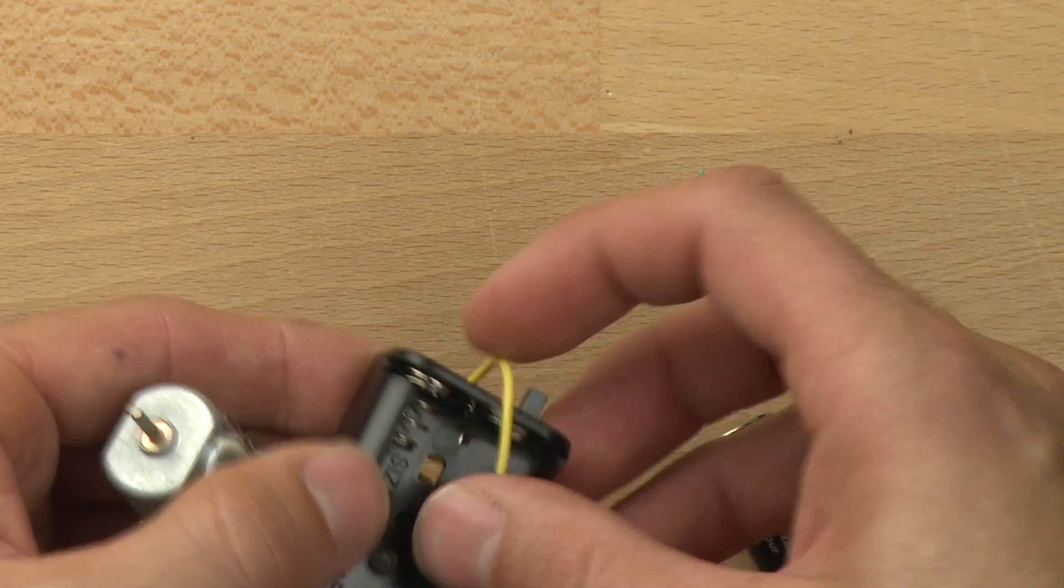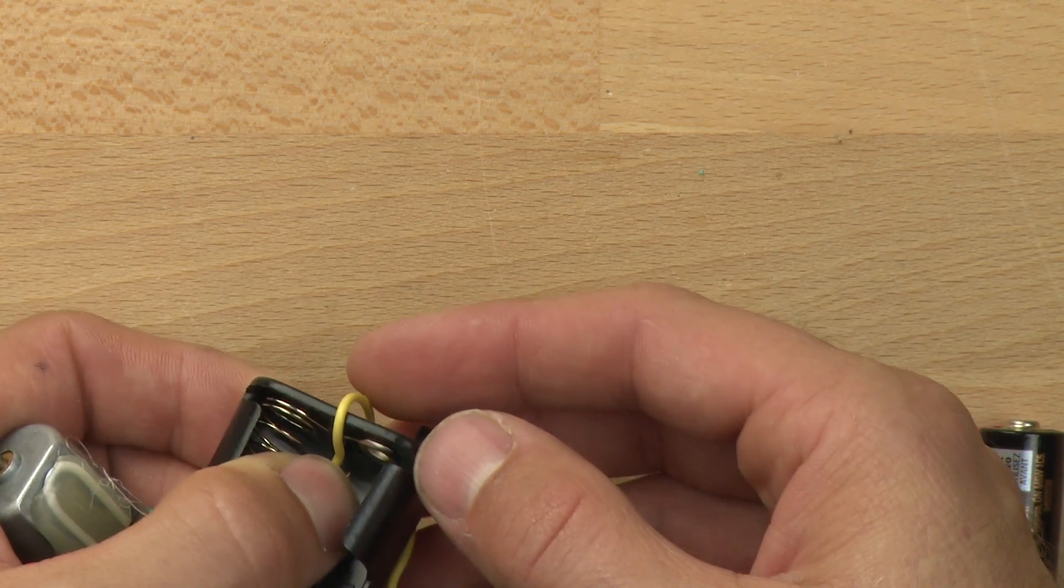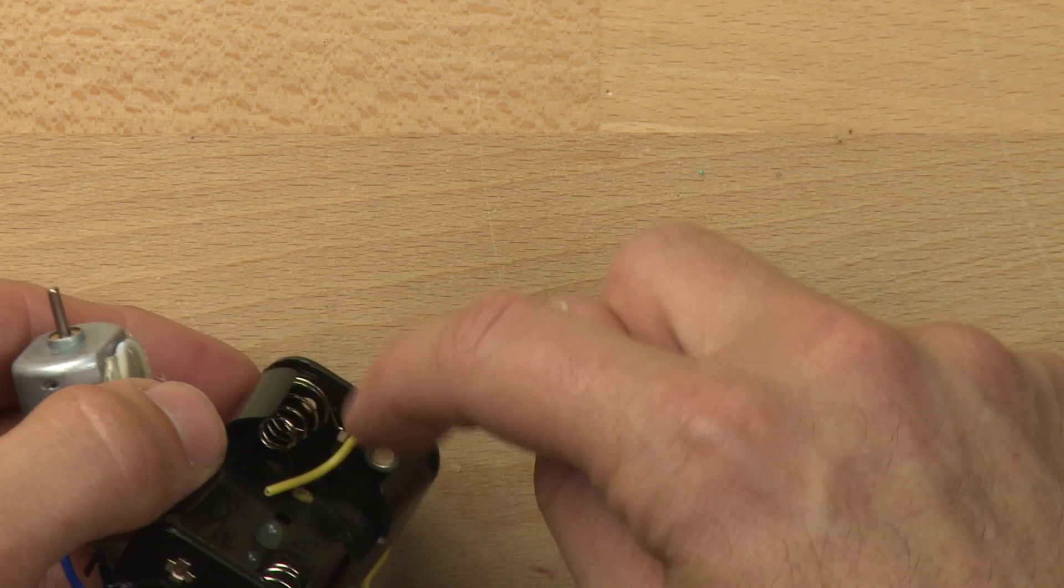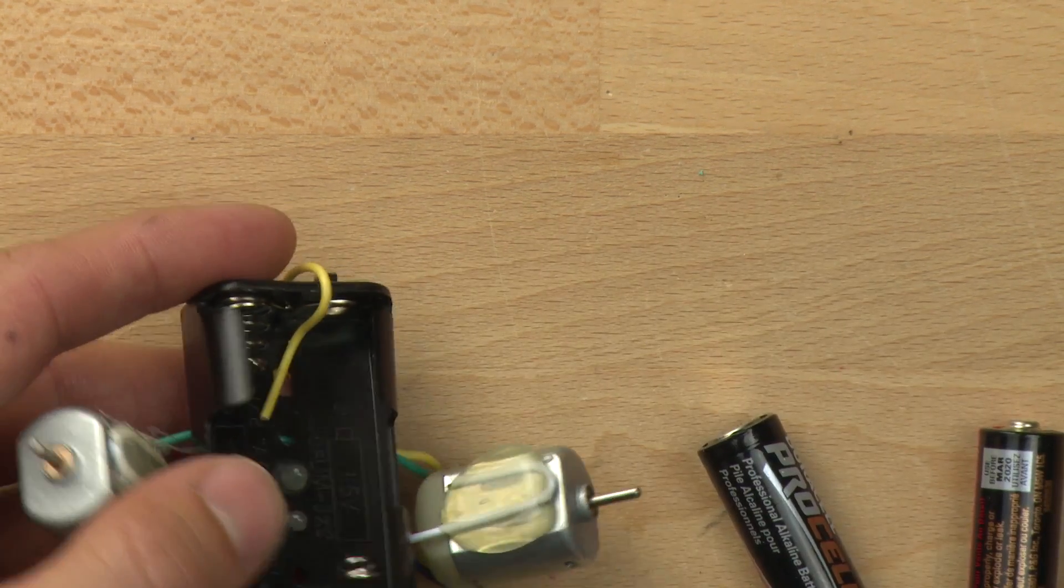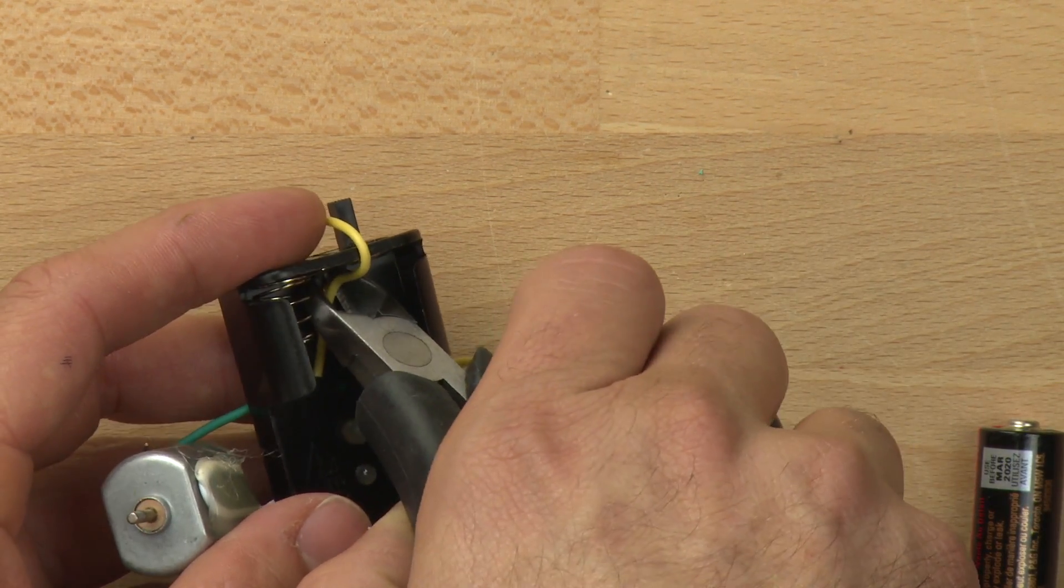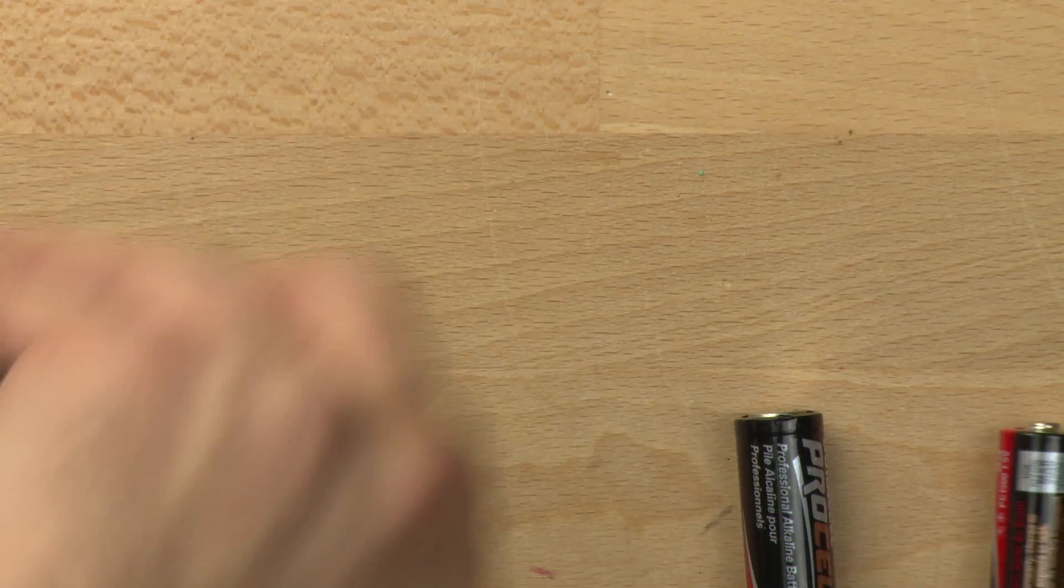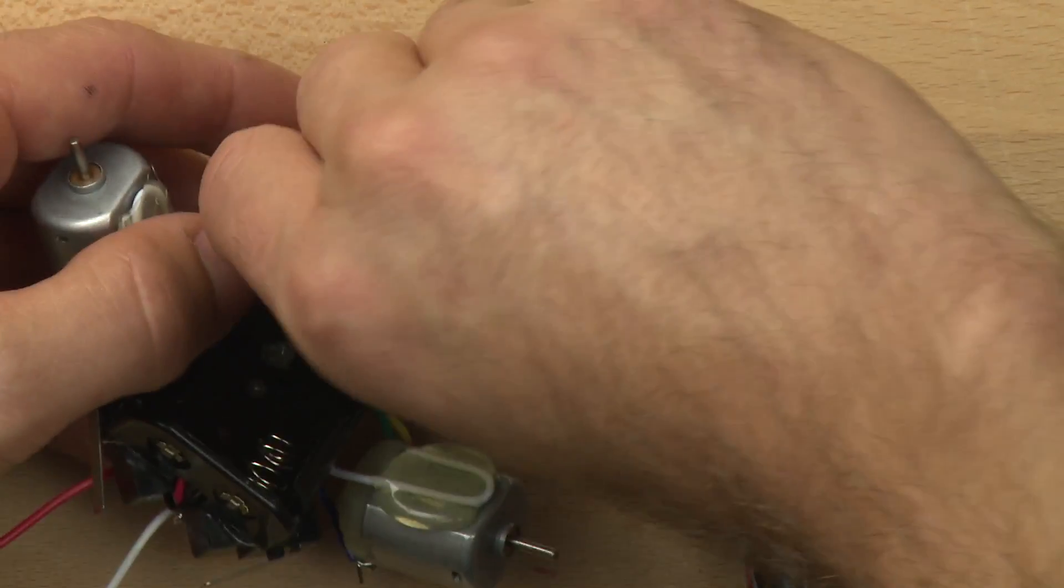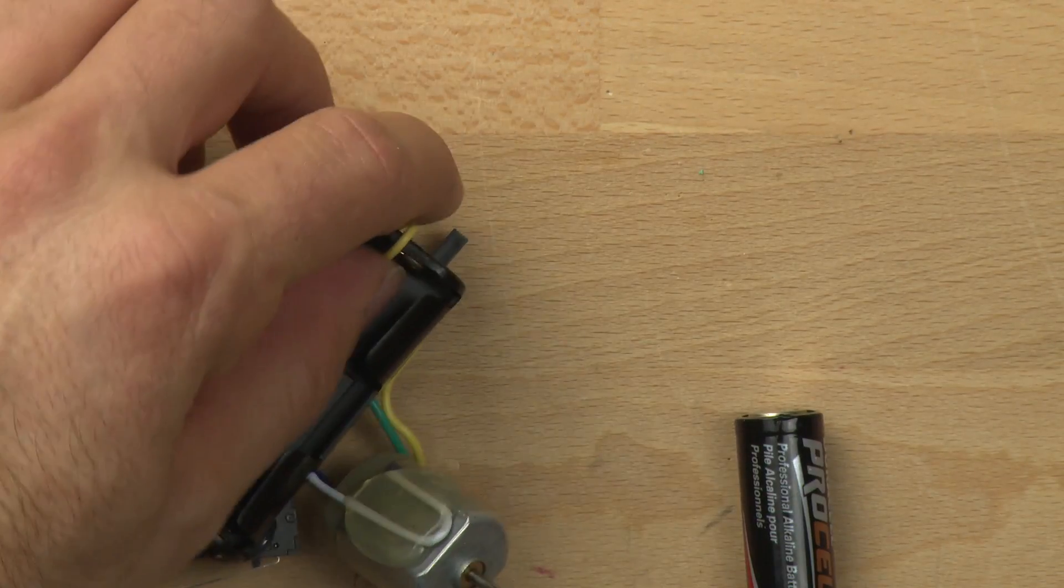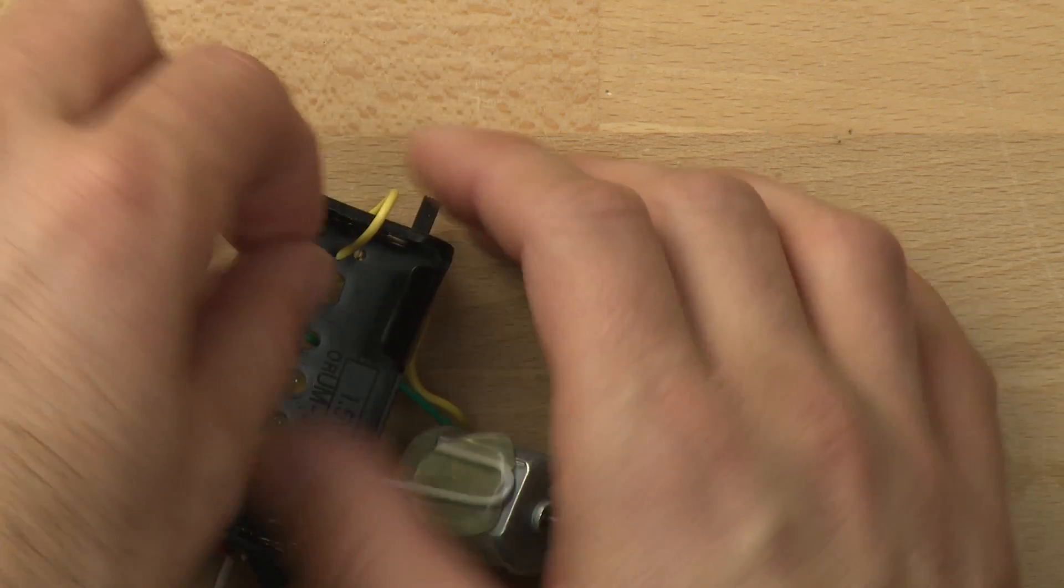See how long it needs to be. We need this wire to intersect with that spring back there, so we can trim off this part like that. Then let's get our wire strippers here.